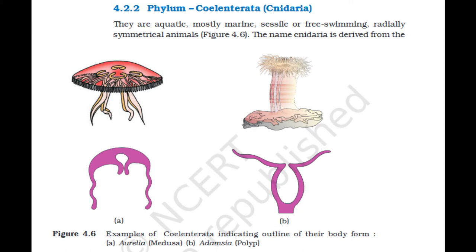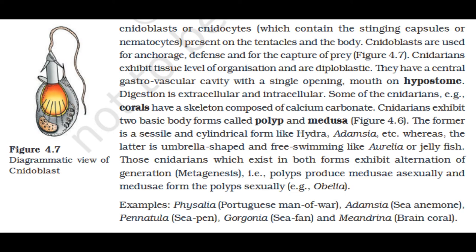Section 4.2.2: Phylum Coelenterata (Cnidaria). They are aquatic, mostly marine, sessile or free-swimming, radially symmetrical animals. The name Cnidaria is derived from cnidoblasts or cnidocytes, which contain stinging capsules or nematocysts present on the tentacles and body. Cnidoblasts are used for anchorage, defense, and capture of prey. Cnidarians exhibit tissue level of organization and are diploblastic. They have a central gastrovascular cavity with a single opening — the mouth on the hypostome. Digestion is extracellular and intracellular. Some cnidarians, e.g., corals, have a skeleton composed of calcium carbonate. Cnidarians exhibit two basic body forms: polyp (sessile and cylindrical, like Hydra) and medusa (umbrella-shaped and free-swimming, like Aurelia or jellyfish). Those cnidarians that exist in both forms exhibit alternation of generation (metagenesis) — polyps produce medusae asexually and medusae form polyps sexually. Examples: Physalia (Portuguese man-of-war), Adamsia (sea anemone), Pennatula (sea pen), Gorgonia (sea fan), and Meandrina (brain coral).